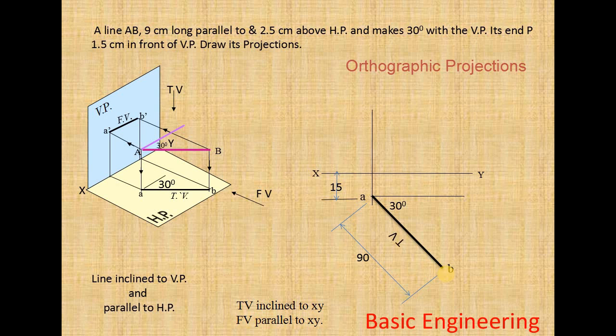From B you draw a vertical line. You can draw any length. Now we have to locate A dash. The above distance is 2.5 cm. From XY to A dash is 2.5 cm.